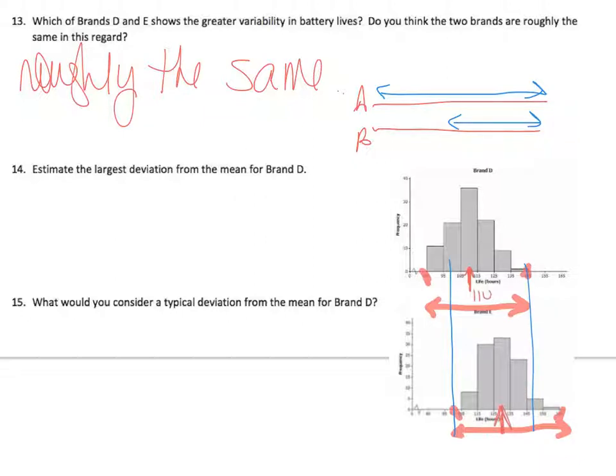Estimate the largest deviation from the mean for brand D. We did say that brand D's mean, we were guesstimating at about 110. So the largest variation would be 85 minus 110. So 85 minus 110 is negative 25. And then from the top, I have to look at a bit different picture, 145. That's going to be 35. And then we didn't do the largest. So the largest deviation for brand D would be right there.